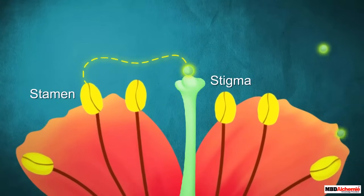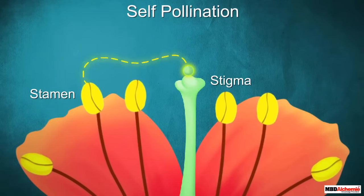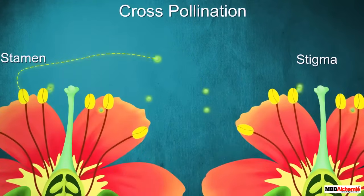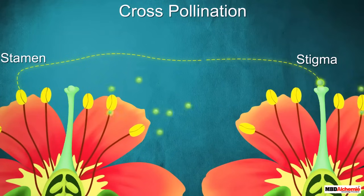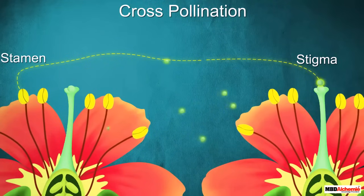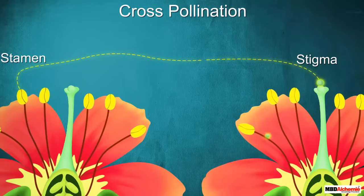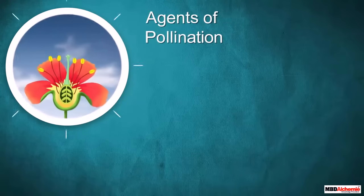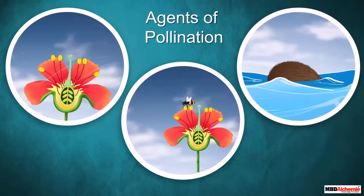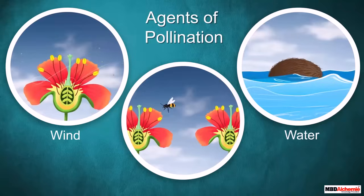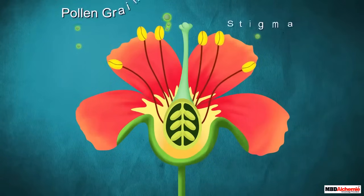If the pollen grain of a flower lands on the stigma of another flower of the same plant, it is called self-pollination. But if the pollen grain of a flower lands on the stigma of another flower of the same or another plant of the same type, it is called cross-pollination. Pollination occurs with the help of different agents like wind, water, or animals.